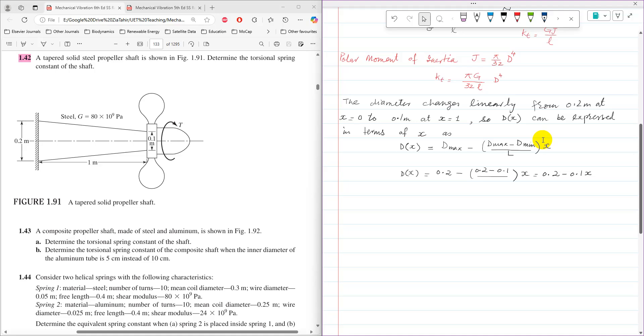So simply, when you are going to substitute X equals 0, so DX will become D maximum. That will become D maximum, and when you are going to substitute X equals L, so then it will become D maximum minus D maximum minus D minimum.